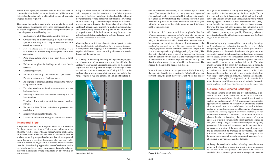This is the practical slip limit because any additional bank would cause the airplane to turn even though full opposite rudder is being applied. If there is a need to descend more rapidly even though the practical slip limit has been reached, lowering the nose not only increases the sink rate but also increases airspeed. The increase in airspeed increases rudder effectiveness, permitting a steeper slip. Conversely, when the nose is raised, rudder effectiveness decreases and the bank angle must be reduced. Discontinuing a slip is accomplished by leveling the wings and simultaneously releasing the rudder pressure while readjusting the pitch attitude to the normal glide attitude. If the pressure on the rudder is released abruptly, the nose swings too quickly into line and the airplane tends to acquire excess speed.